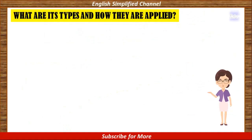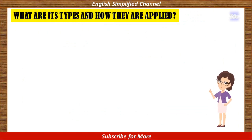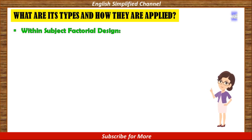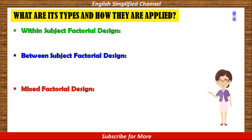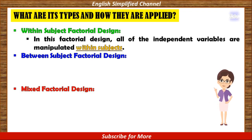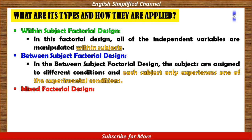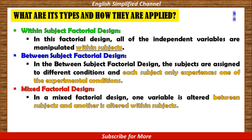And now we've come to what are its types and how they are applied. The types of factorial design are classified into: within-subject factorial design, between-subject factorial design, and mixed factorial design. Within-subject factorial design means all of the independent variables are manipulated within subjects. In between-subject factorial design, the subjects are assigned to different conditions and each subject only experiences one of the experimental conditions. In a mixed factorial design, one variable is altered between subjects and another is altered within subjects.